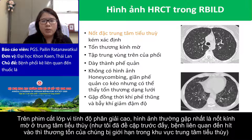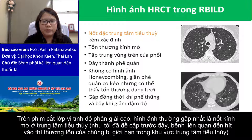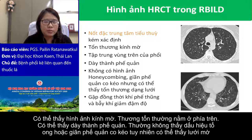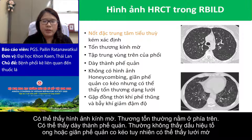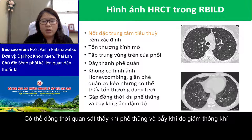On HRCT, the most common pattern is poorly defined centrilobular ground glass nodules. As I previously mentioned, diseases associated with inhalation injury like smoking show lesions confined to the centrilobular area on HRCT. Here is the centrilobular nodule. Ground glass opacity can be found. The lesion is slightly upper zone predominant. Bronchial wall thickening can be detected. Honeycombing and traction bronchiectasis should not be found. However, reticular lesion can be seen. Concomitant emphysema and hypoattenuation air trapping can be observed.